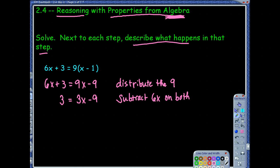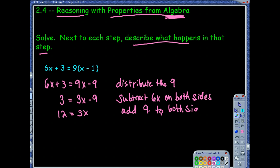That's important — the key that we've learned in algebra. And then I would move the negative 9 to the other side by adding 9 to both sides. And then divide both sides by 3. So I'm going to end up with 4 equals x, with 'divide by 3 on both sides' as the reason.